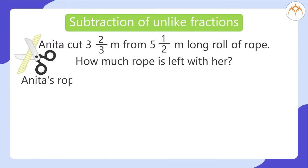Anita's rope, 3 and 2 third, which is equal to 11 by 3 meter rope. 3 into 3 is equal to 9 and 9 plus 2 is equal to 11.